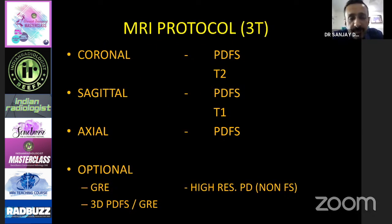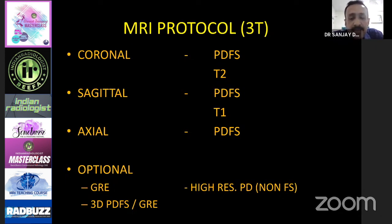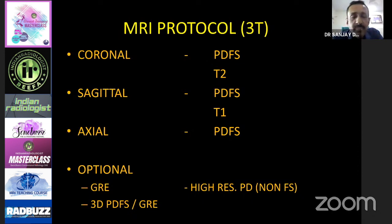My protocol for rotator cuff tears is coronal, sagittal and axial PDFS images. I use coronal T2 to identify a tear versus tendinosis. Sagittal T1 I use for the muscles — whether there is any fatty atrophy or fatty replacement. For axial, I do not take a gradient image; PDFS is more than enough to see the articular cartilage and the labrum. Optional images are gradient images and 3D PDFS images, currently available on some machines, which allow multiplanar reformations to see small tears.